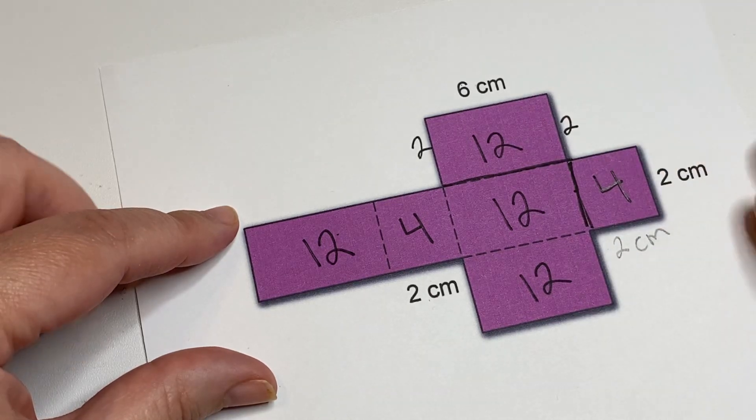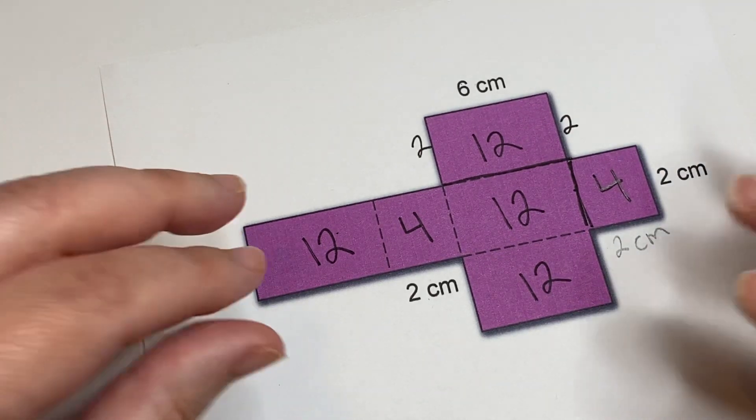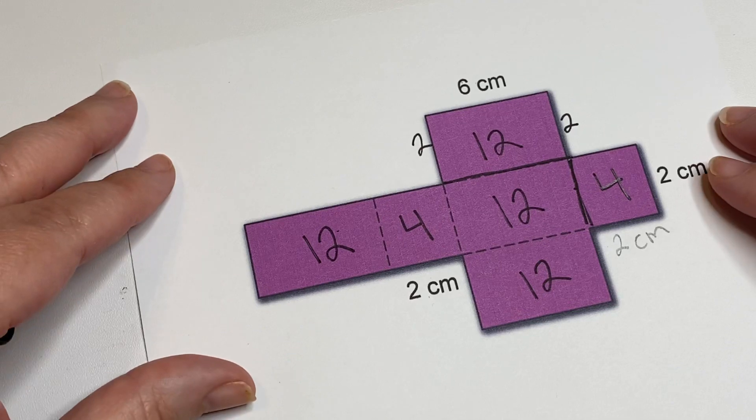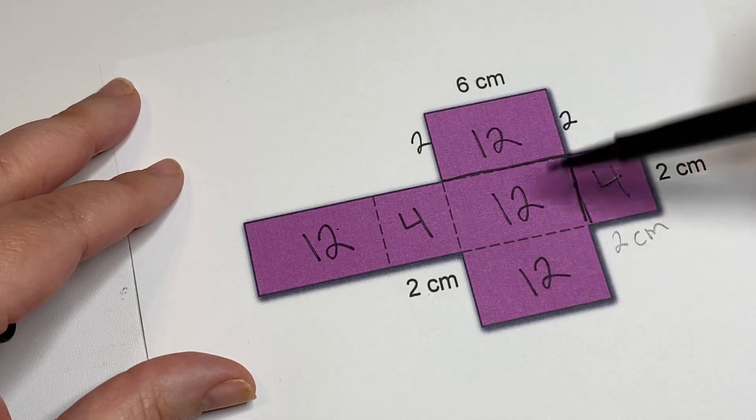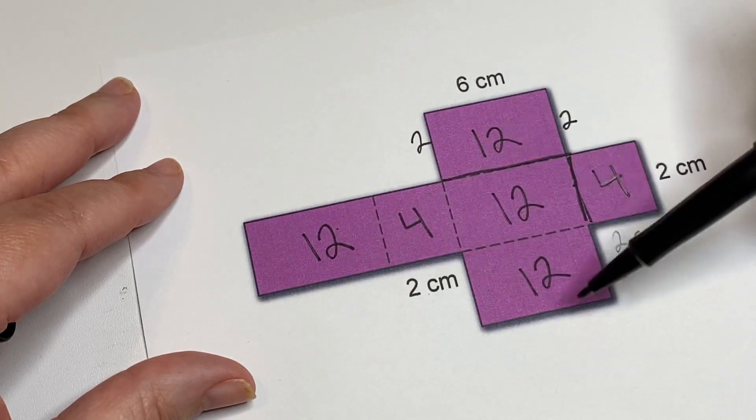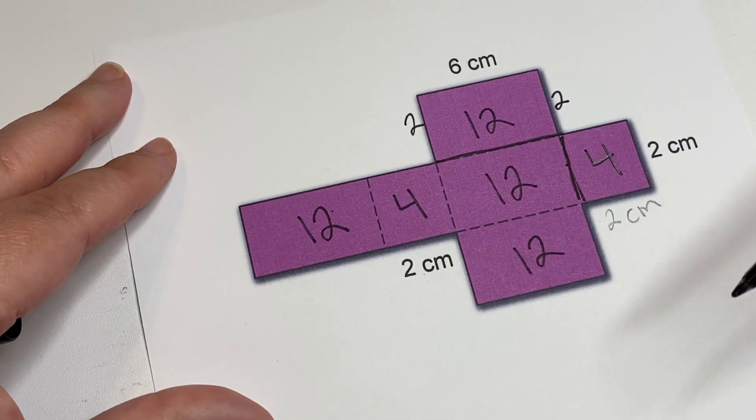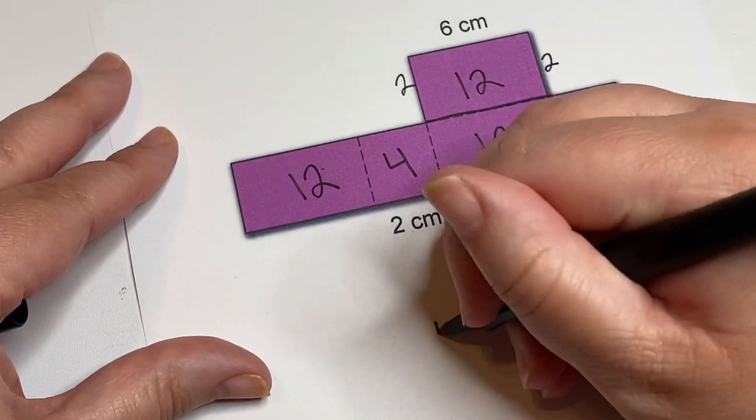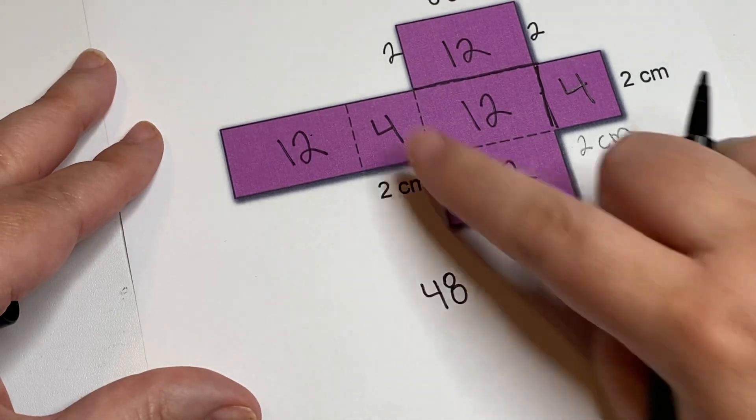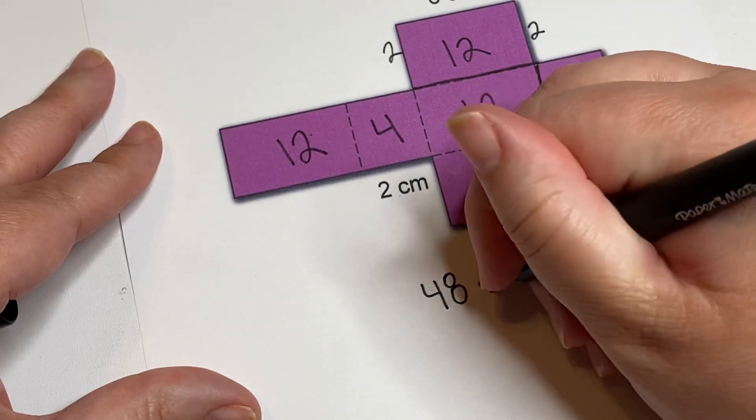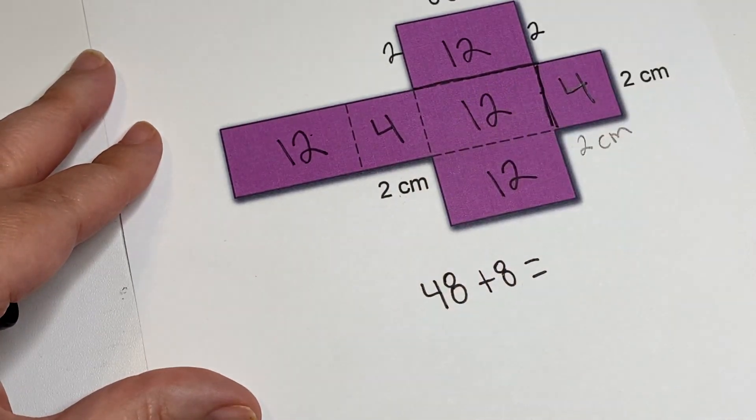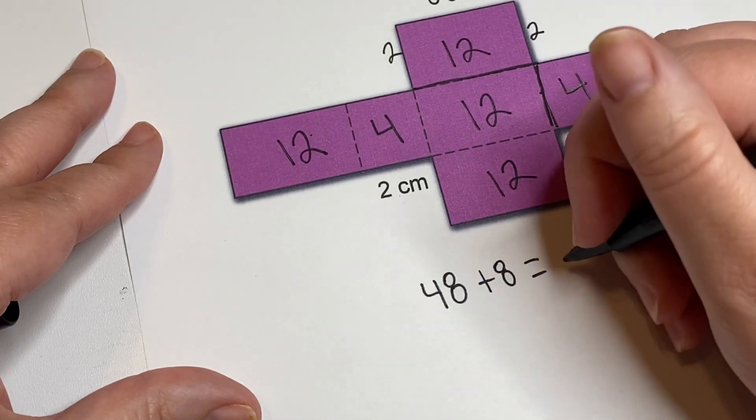So we would just add up all of these surface areas together to find the total surface area of this entire rectangular prism. Now we can see here that we actually have four twelves, so we can just multiply four times 12, which is 48. And then we can add the two fours together, which is 8, so we can do plus 8, and we're going to get 56.